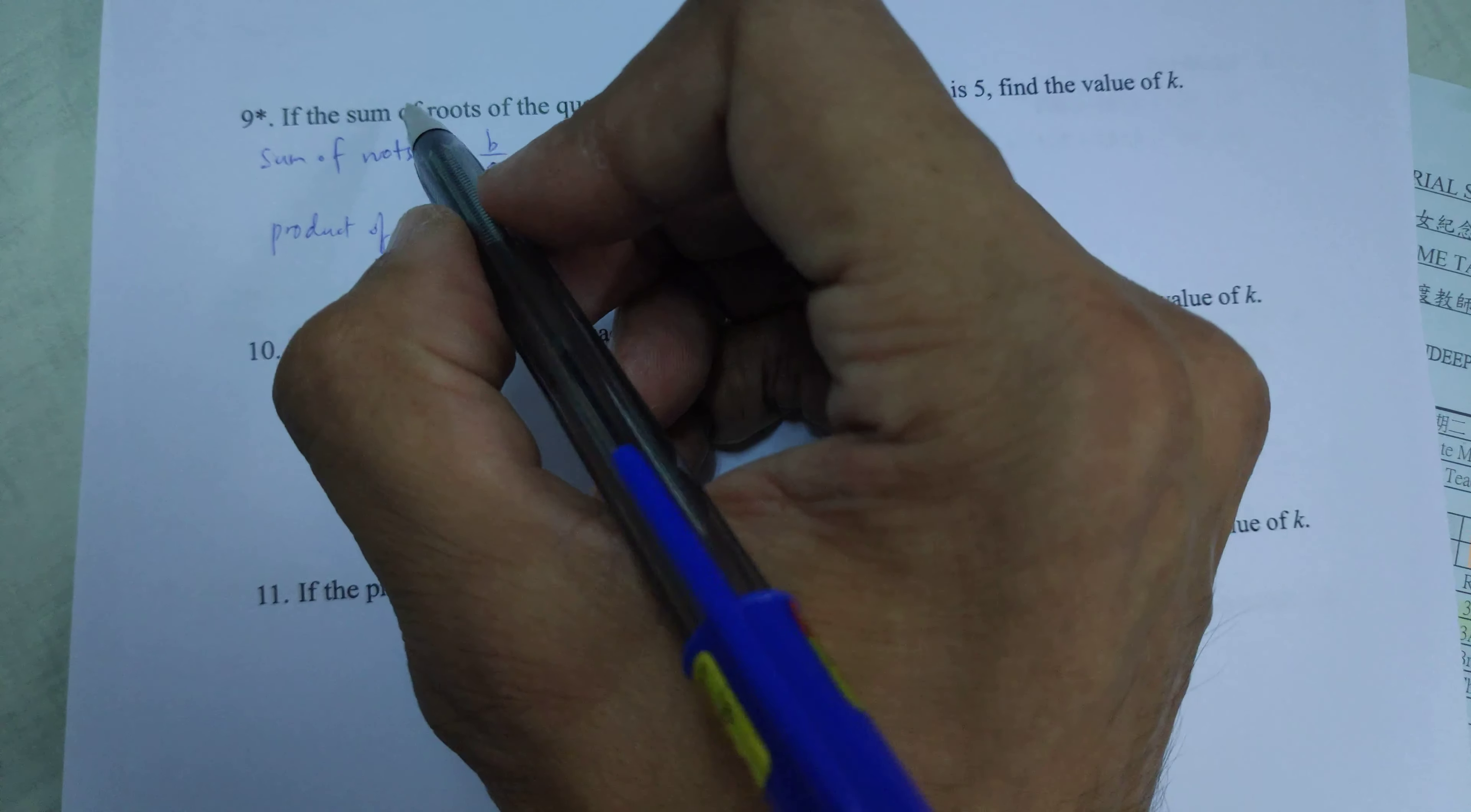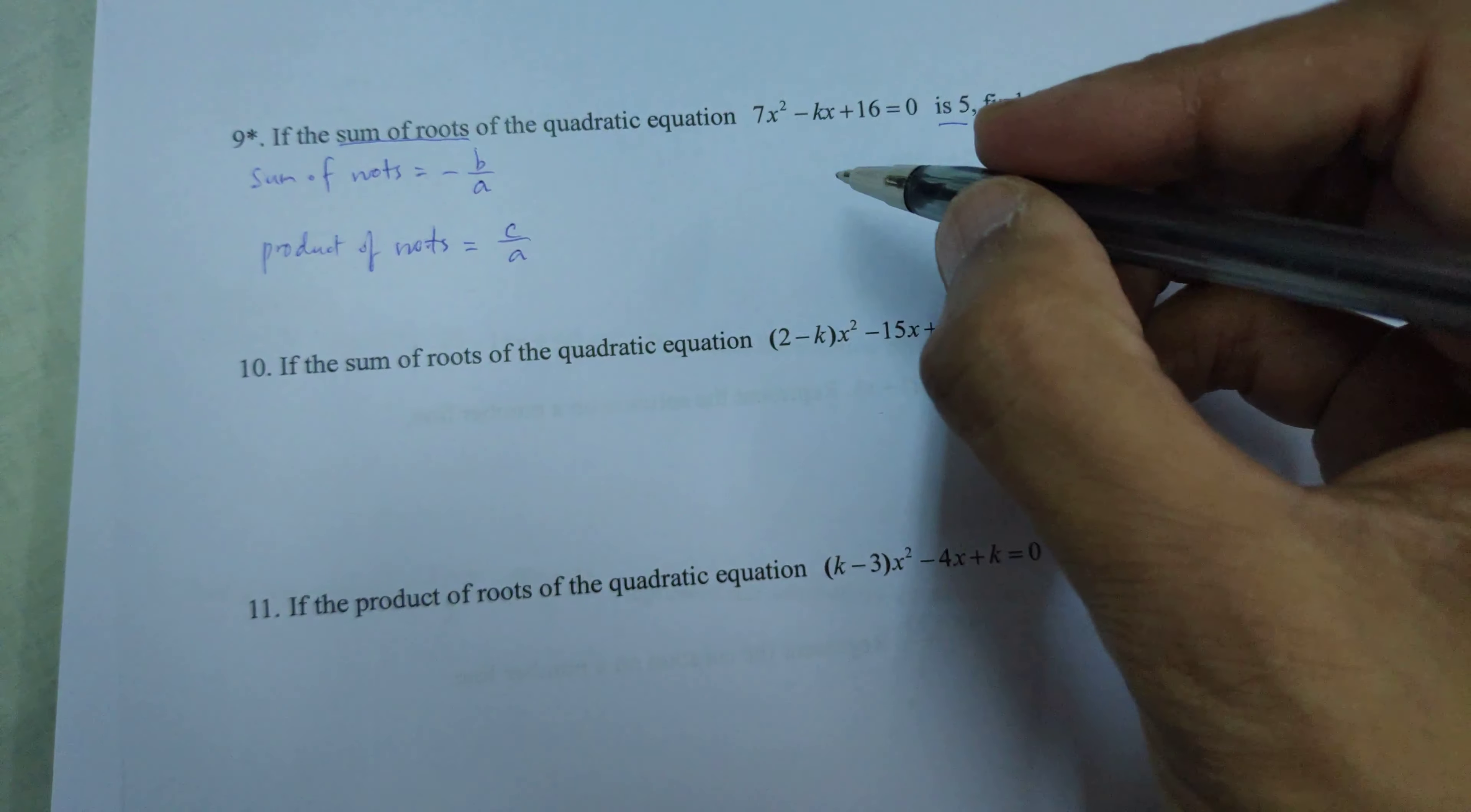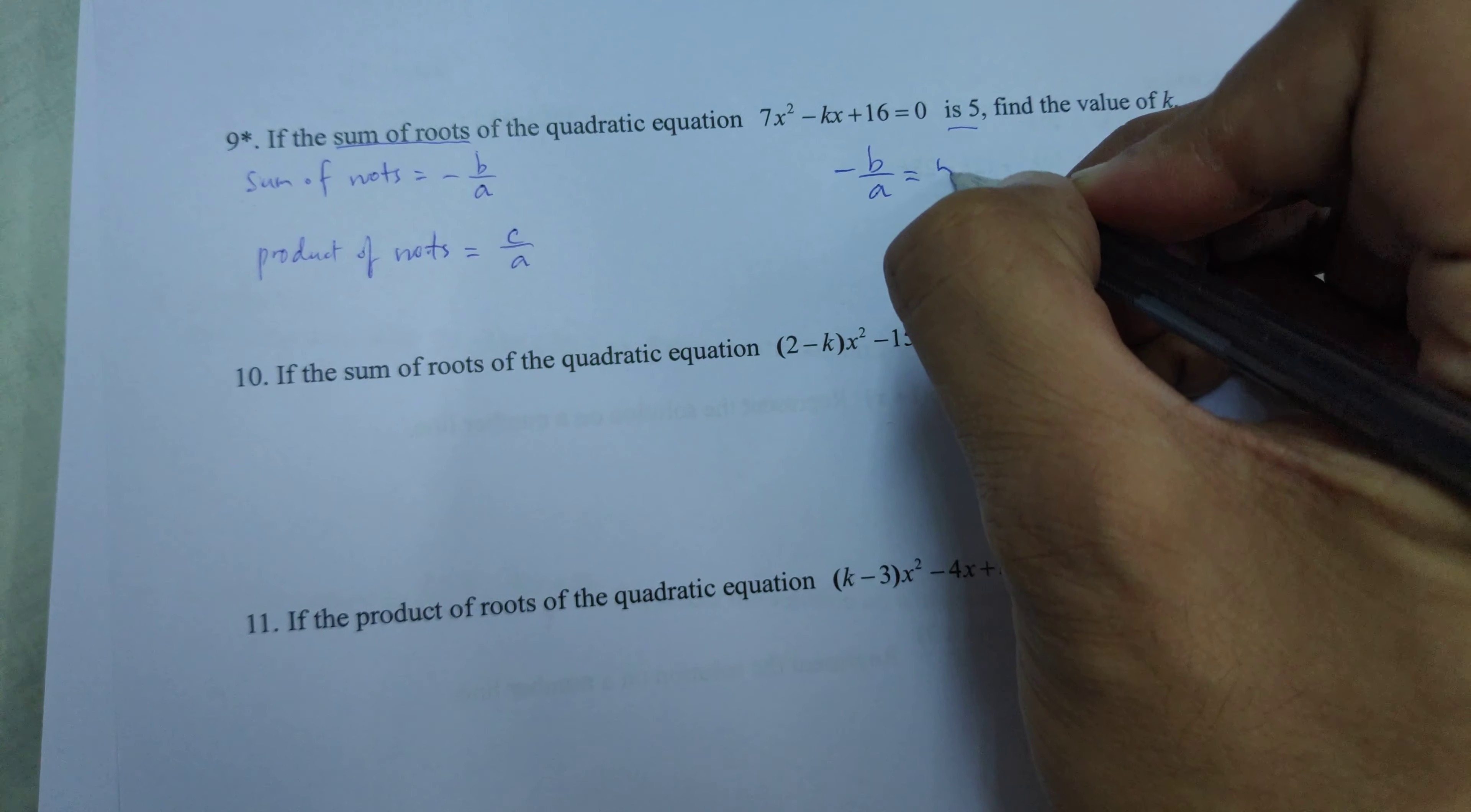In these questions they're telling us that the sum of roots is 5, so using the equation for sum of roots, negative b over a equals 5.